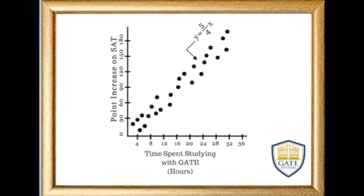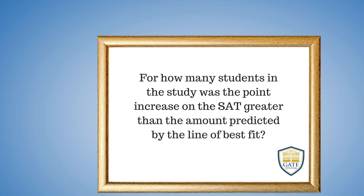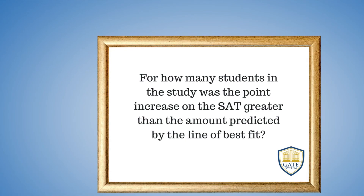Check out this scatter plot. The data points are close together and trend upward, meaning there's a strong positive correlation between time spent studying with GATE and the point increase on the test. If the data were all over the place, we'd say there's no correlation. This is a line of best fit — it approximates the data in a linear model. You might be asked how many points your math score should go up if you spend 32 hours studying; for that, plug 32 in for x. A question may ask how many students had a point increase greater than what the line of best fit predicted — just count the points above the line.